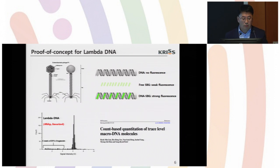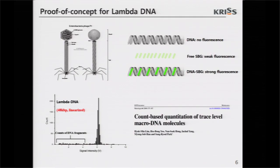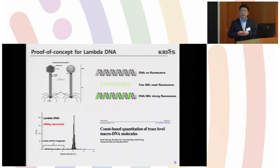In 2009, we reported proof of the concept for lambda DNA. DNA in this virus was extracted and DNA itself is not fluorescent. But if we add SYBR Gold fluorescent dye, then the DNA will become highly fluorescent, because SYBR Gold itself is not strongly fluorescent. The fluorescent signals will be quenched by water molecules. But after binding to DNA, it becomes very strongly fluorescent. So we can detect and quantify DNA molecules. You can see a histogram here. And it was reported in Metrologia in 2009.